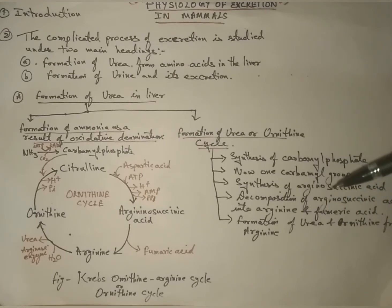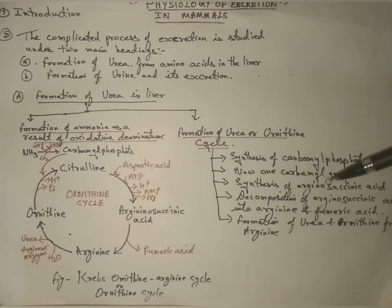In mammals, excreted urea is produced in the liver. Urea is produced from ammonia by the ornithine cycle, the urea cycle.